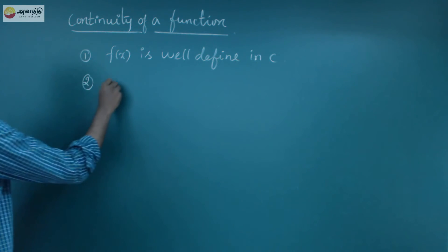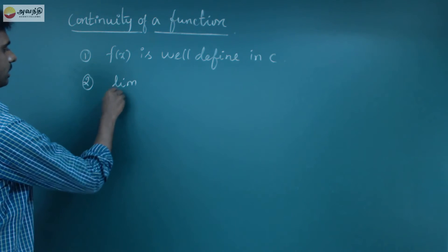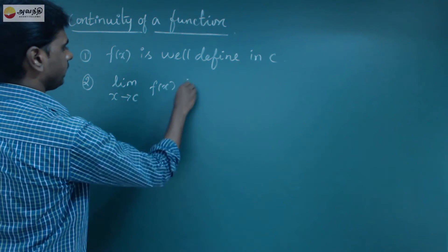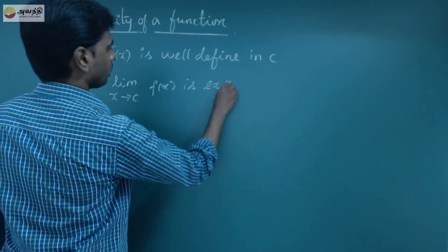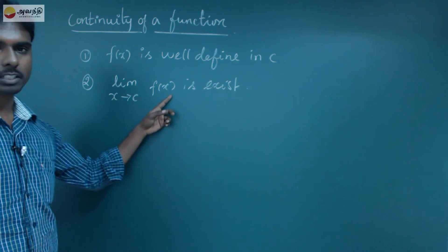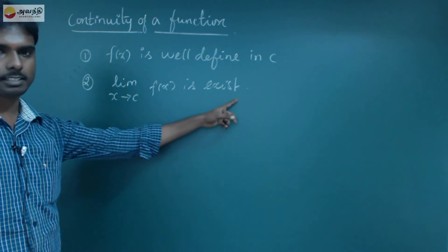That's the second one. Limit as x tends to c, f(x) exists. So if we know the second condition, that point, that function, limit exists.